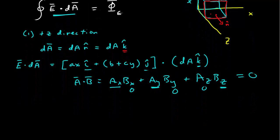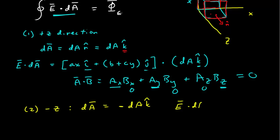That was easy enough. Since the other side will be the same, let's do the negative z direction. The area element vector is −dA k̂, and for the same reason as before, E · dA equals zero everywhere. Of course, if the integrand is zero everywhere, the integral is also zero — no matter how many zeros you sum up, you still get zero.